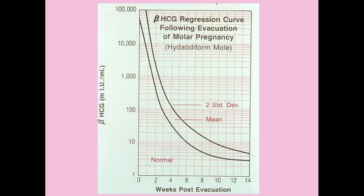This is the regression curve. She'll start out high, and then after the D&C we plot her HCG levels at one week, two weeks, three weeks, and so forth. Once levels fall into the normal range, we can switch to monthly monitoring.